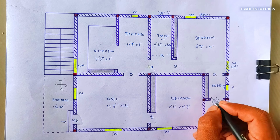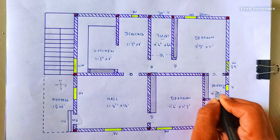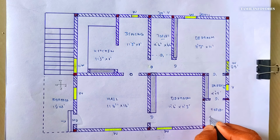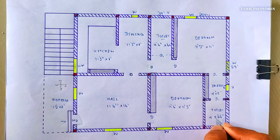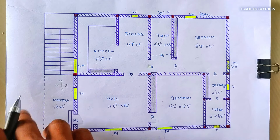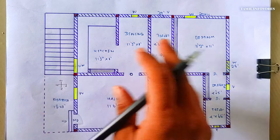Dressing area is 4 to 5 feet. The toilet is 6 feet.